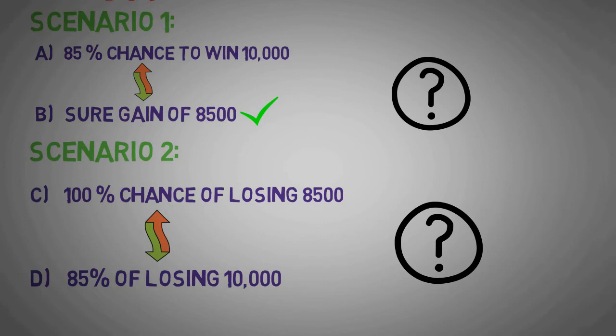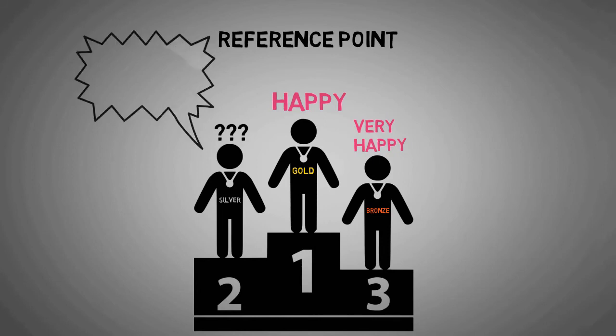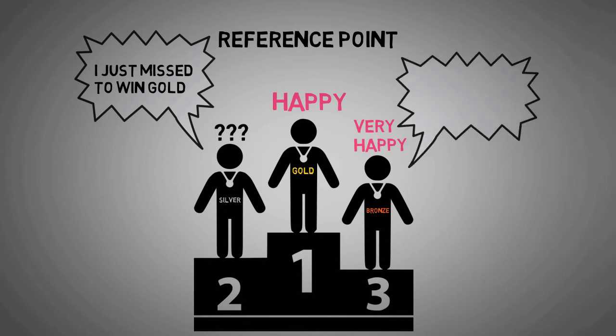Let's take another example. In a race when winners are declared, gold medallist is happy, bronze medallist is very happy, but silver medallist doesn't appear to be happy. Reason is reference point for a silver medallist - he just missed winning the gold, so he is sad. But bronze medallist is overwhelmed because he feels what would have happened if he would have been on rank 4, so making it to third rank makes him happiest of all.